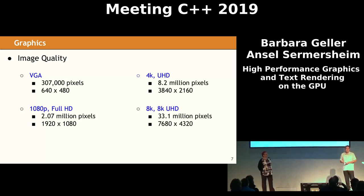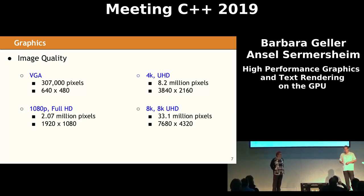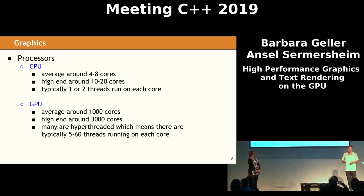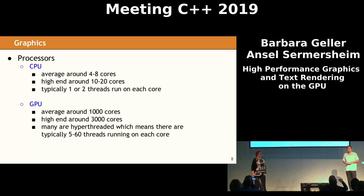8K monitors are on the horizon. You can buy one now for about $4,000. And of course, as hardware always does, this will drop in price and these will become more common. An 8K monitor has 33 million pixels that will need to be updated every time the screen is refreshed. That's a lot of work. Because if we're rendering on the CPU, this is complicated. The CPU has four to eight cores — a really high-end one might be 20. And you normally want to run one or two threads on each core for maximum efficiency. The CPU is really not designed to process data at this kind of parallel scale.